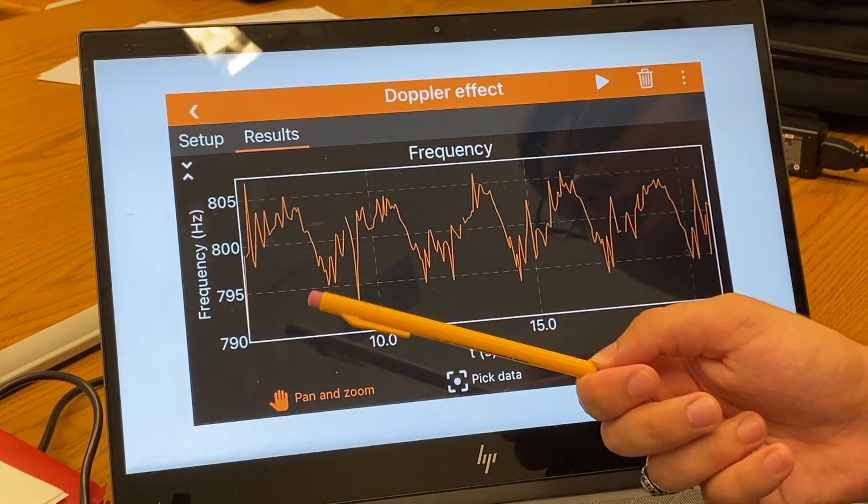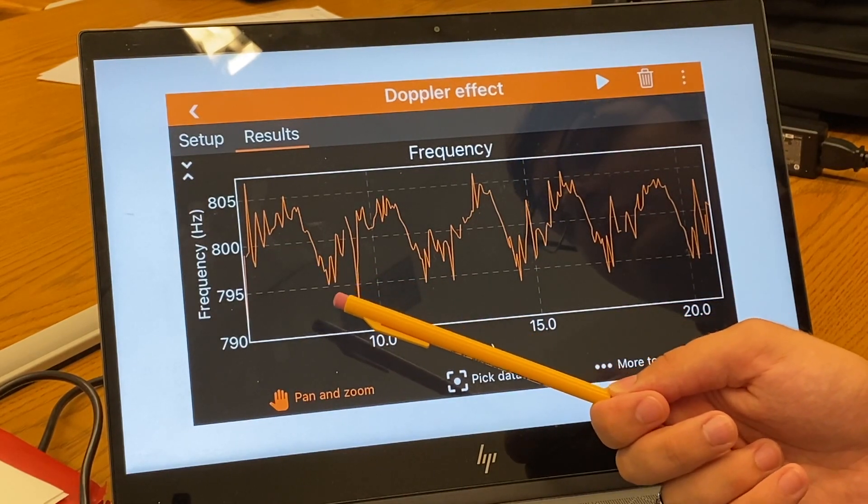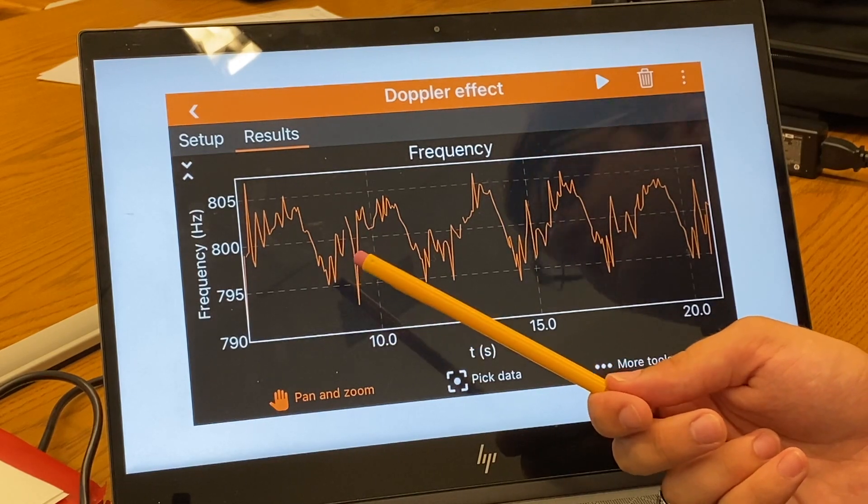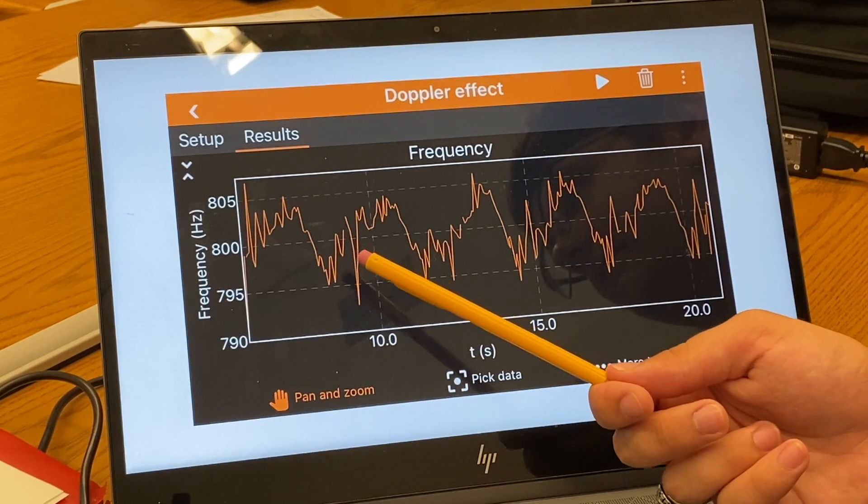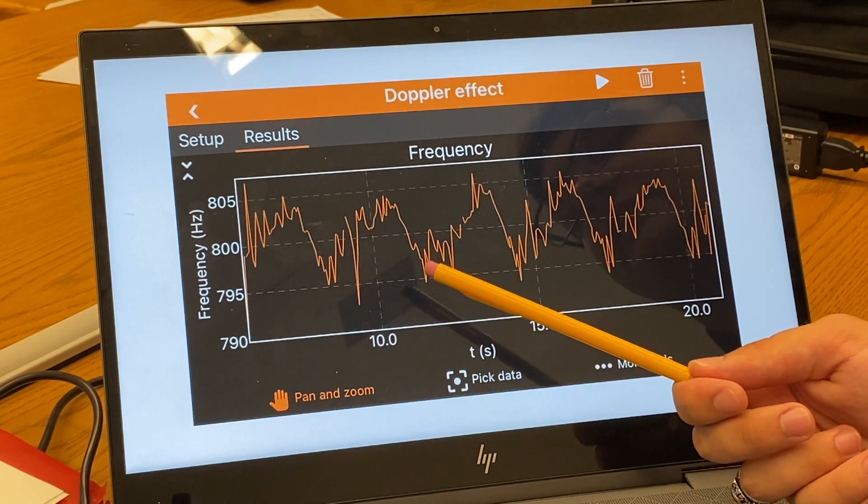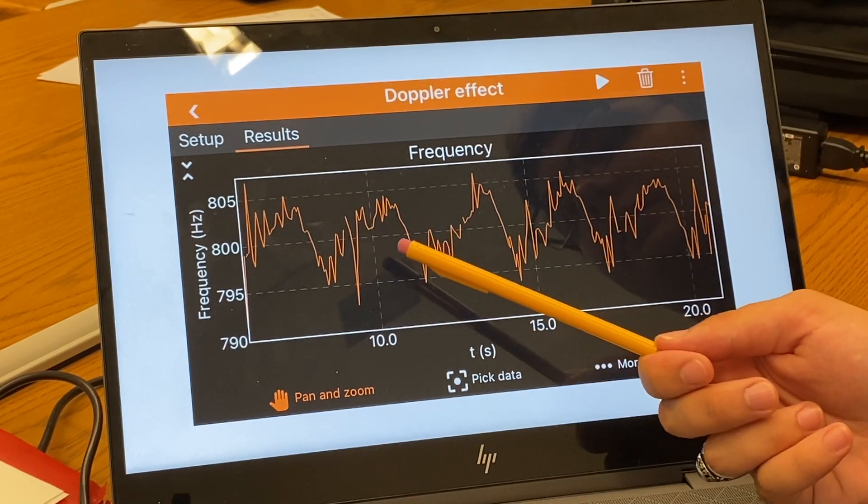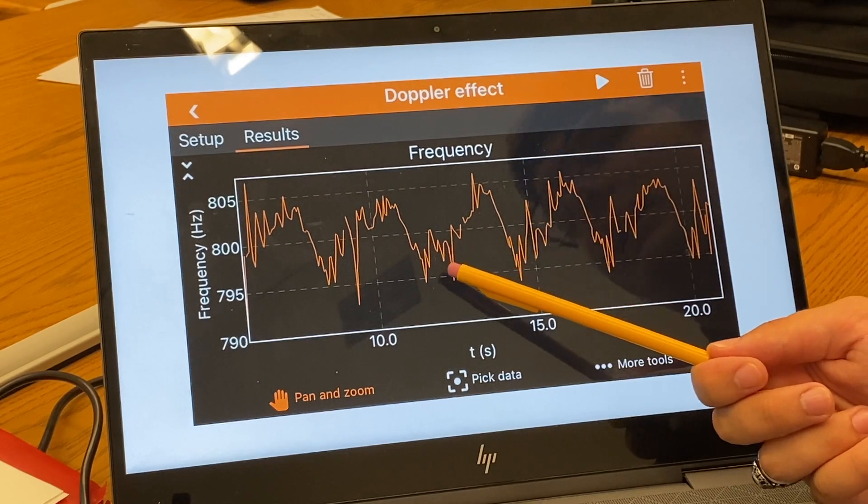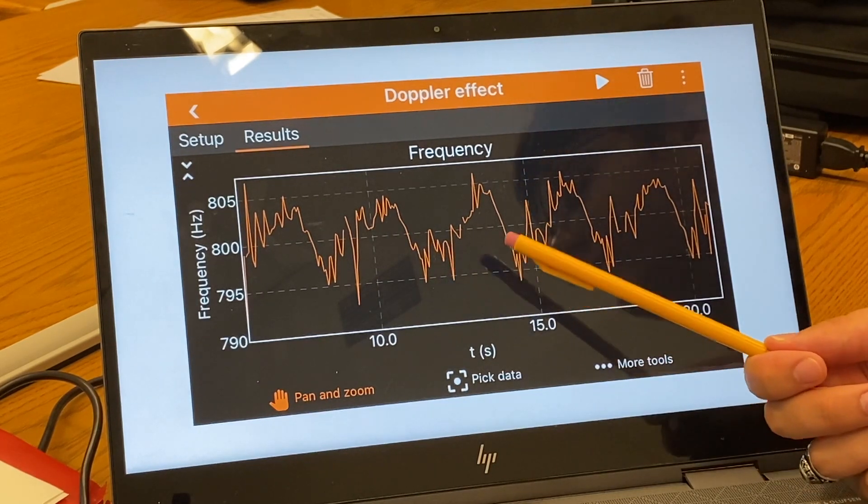Relative to the observer, which in this case is the phone, the frequency appears to be changing. This is because the phone has velocity relative to the sound that is recording. This causes the sound waves to become compressed and appear higher, or stretched out and appear lower, as the phone moves towards and away from the source of the sound.